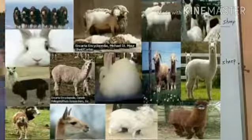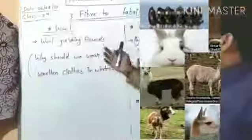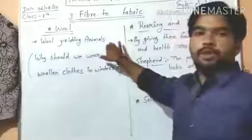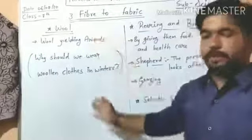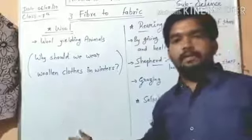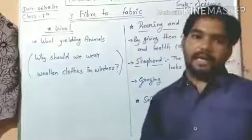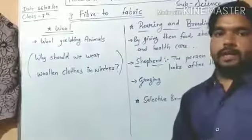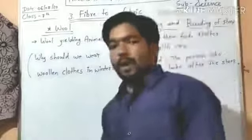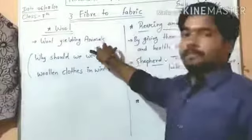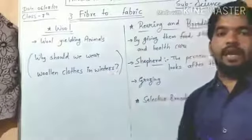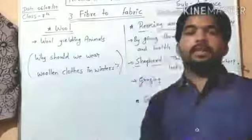Wool-yielding animals include angora goat, yak, alpaca, llama, camel, rabbit, and sheep. These are wool-yielding animals. You may wonder why these wool-yielding animals have such a thick coat of hair or a thick layer of hair on their body.